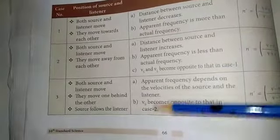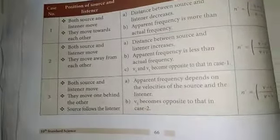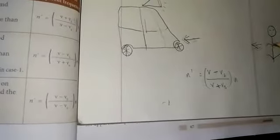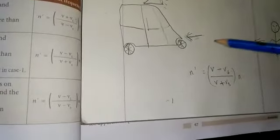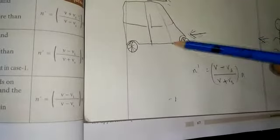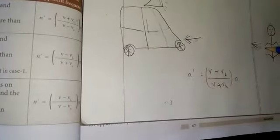The source follows the listener. You can have the source move first and the listener move first — source will follow. The two main directions: source will first move and the listener will move.